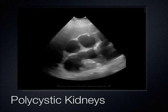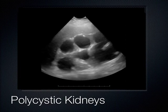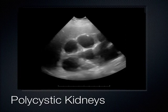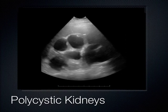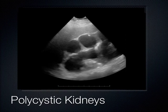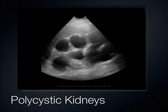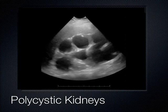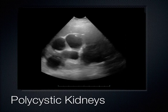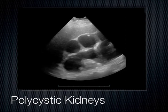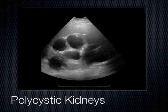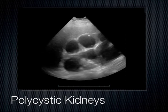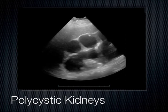In polycystic kidney disease, you see multiple cysts out in the cortex. It's bilateral, and can affect other organs — you can see cysts in the spleen and around the liver. Ovaries can look similar in polycystic disease.